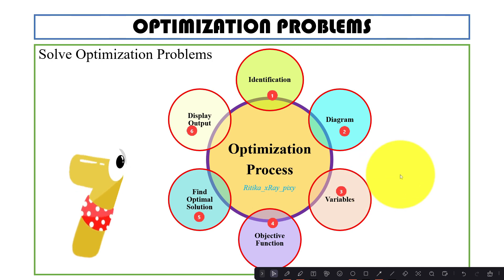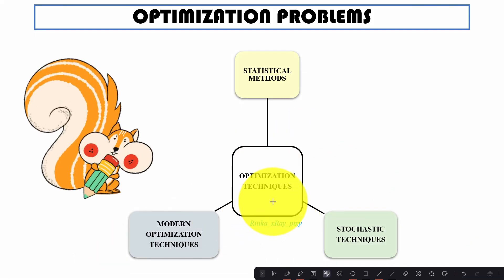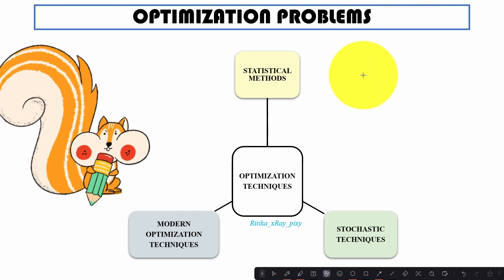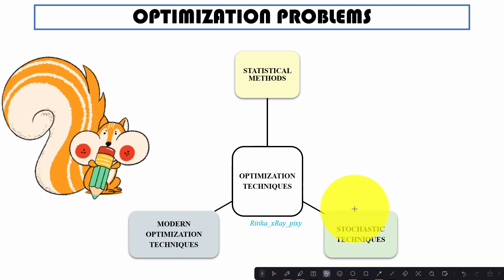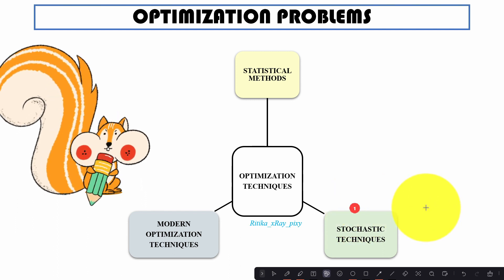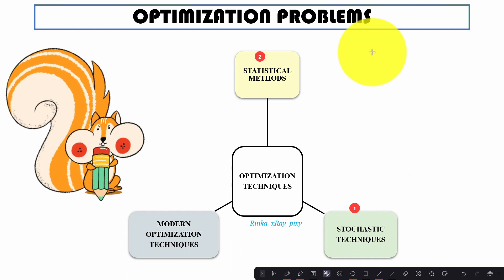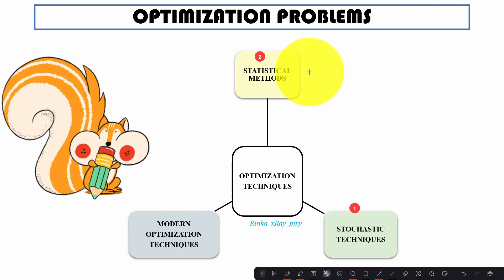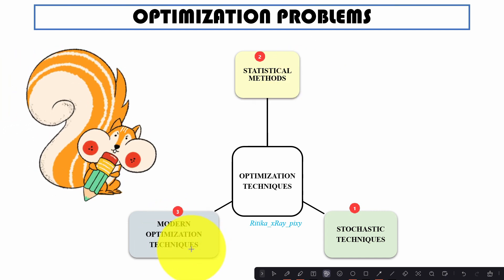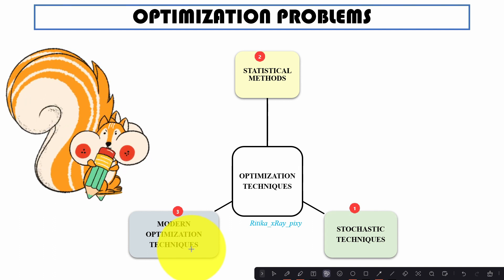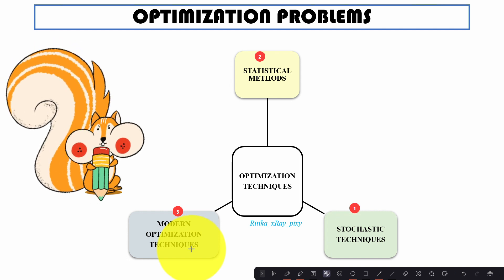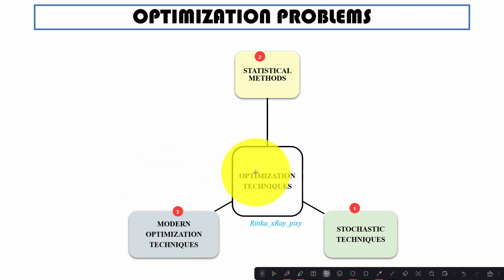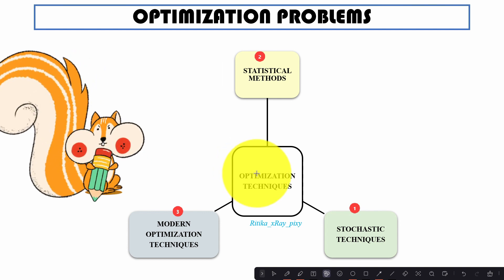There are different optimization techniques we can use to solve optimization problems. Mathematical programming techniques are used to find the minimum of a function. Stochastic techniques are used to analyze the problem, and statistical methods are used to analyze experimental data. Modern optimization techniques include meta-heuristics like genetic algorithm, ant colony optimization, particle swarm optimization, neural networks, and fuzzy optimization. Mathematical optimization techniques also include game theory, multi-objective programming, and linear, non-linear, and dynamic programming.